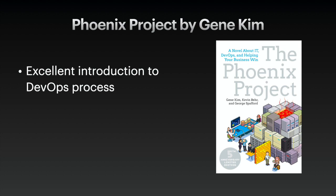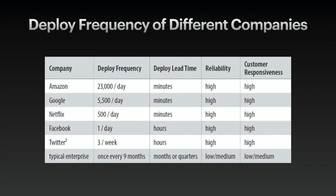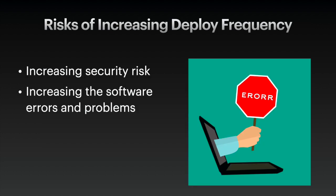One of the best books written about the DevOps process is the Phoenix Project by Gene Kim. A reference page found in the back of the book explains what software deploy frequencies are like from different companies. Amazon, for example, deploys software updates about 23,000 times per day due to a well-constructed DevOps process. In contrast, a typical enterprise deploys software only once every nine months. But vulnerability and security risks are directly proportional to deploy frequency.